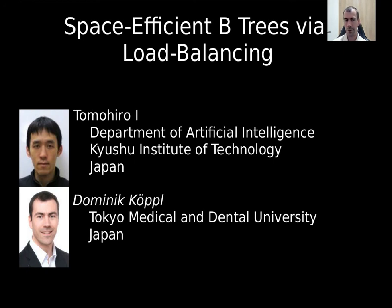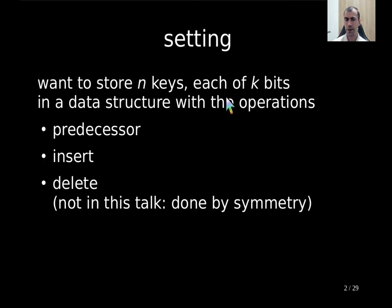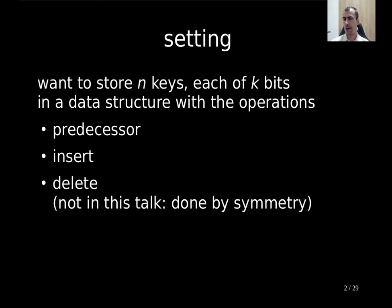Imagine that you want to store n keys, and each key takes k bits. You want to store these n keys in a data structure that supports the following operations. The first operation is predecessor: given a key k, you want to find in your data structure either the key k if it is present, or the key that is the next smaller one, closest to key k.